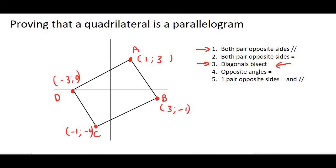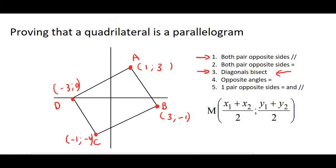So what we do is we use the midpoint formula and we use it on the two diagonals. So I'm going to do the first diagonal, which could be AC. So I'm going to say capital M, AC, and I'm just going to work out the midpoint.